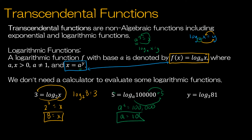For the last question, I have 3 to the y is equal to 81. So 3 to what power is equal to 81? That would be 3 to the fourth power — 3 × 3 × 3 × 3. So I did one of each: one where we're solving for x, one where we're solving for a, and one where we're solving for y.